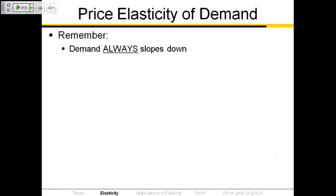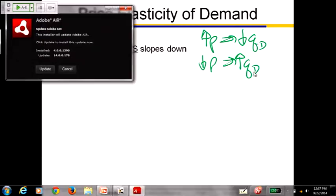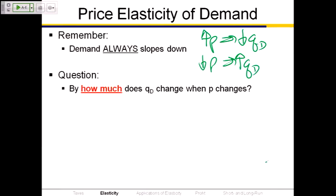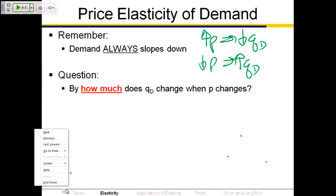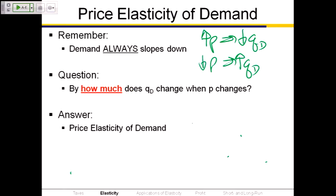Let's look at price elasticity of demand. For price elasticity of demand, remember that the demand curve always slopes down, so we don't have a sign ambiguity. It's always the case that an increase in price gives a decrease in quantity demanded and a decrease in price gives an increase in quantity demanded. So the price elasticity of demand is always going to be negative, because price and quantity demanded move in opposite directions. The price elasticity of demand tells us by how much quantity demanded changes when the price changes.